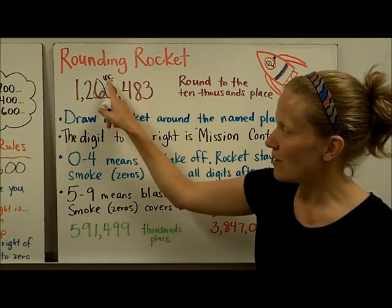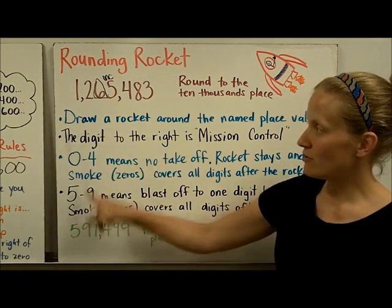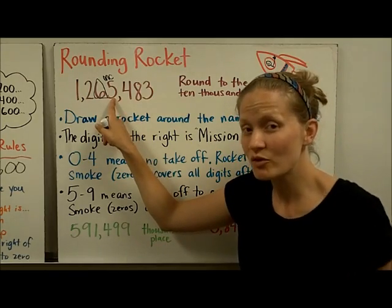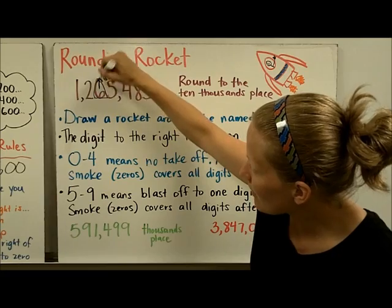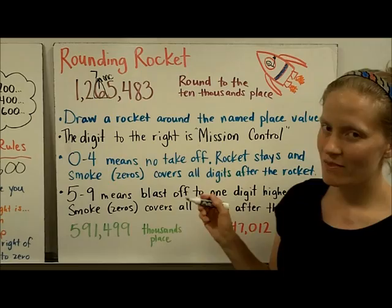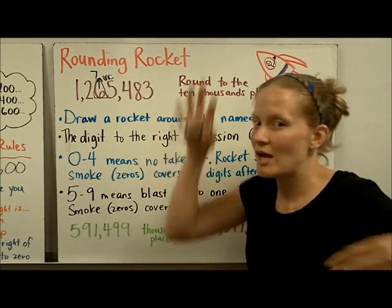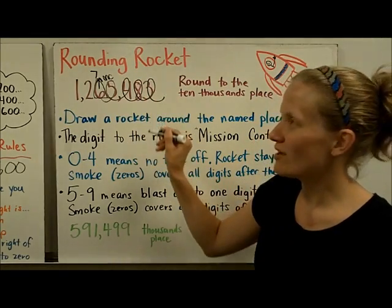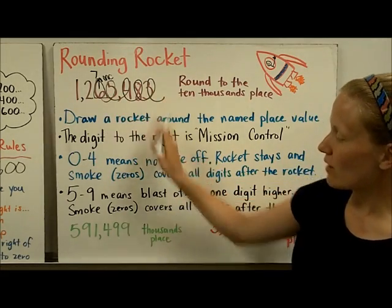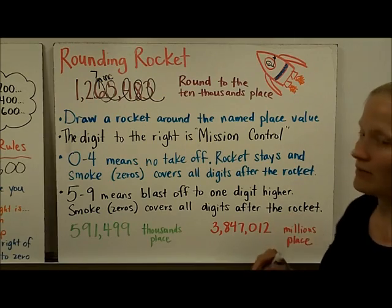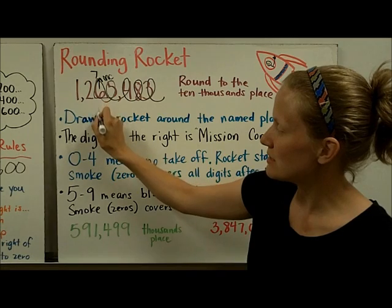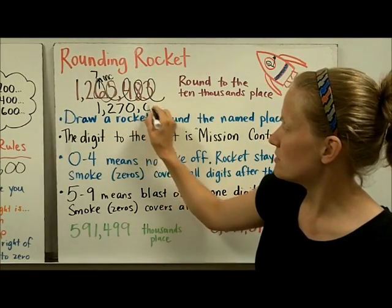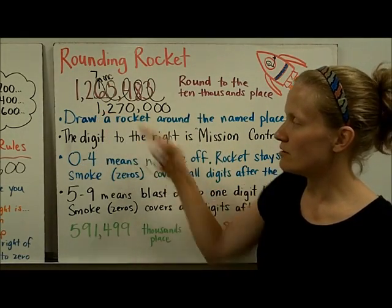5 through 9 in mission control means that the rocket gets to blast off to one digit higher. So this number counts down — 5, 4, 3, 2, 1, blast off — and I show it by drawing an arrow showing it goes up to a 7; it blasts off to the next number. Then the really cool part: when a rocket blasts off — or even just stays — after mission control gets to zero, smoke comes out and covers all the digits, turning them to zeros. So the digits to the right of the rocket all become zeros. The 1 and the 2 stay the same, the 6 in the 10,000th place blasted off to a 7, and everything else turned to zeros — so rounded to the 10,000th place, it's 1,270,000.